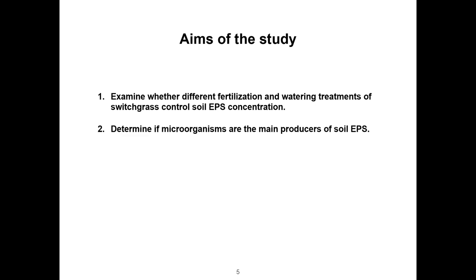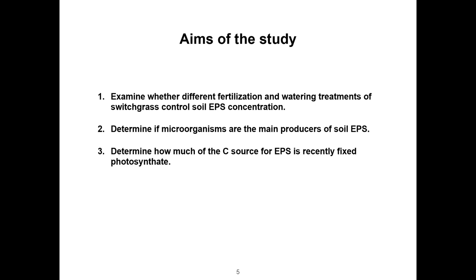The aims of this study are: first, to examine how different fertilization and watering treatments of switchgrass can control EPS concentration; second, to determine that the EPS is actually from a microbial source; third, to determine how much of the carbon source for EPS came from carbon fixation by the plant; and lastly, to examine whether treatments with more EPS also show increased aggregate stability.